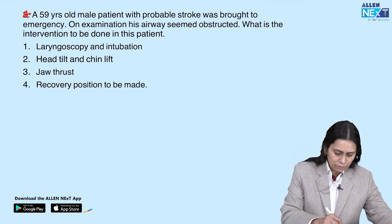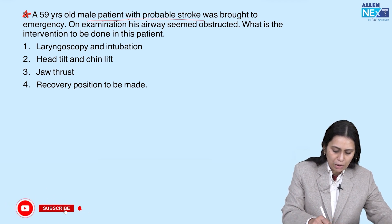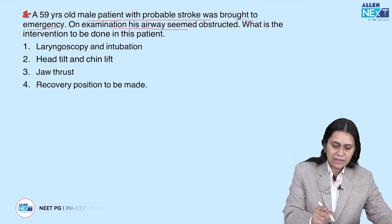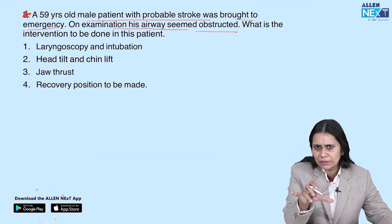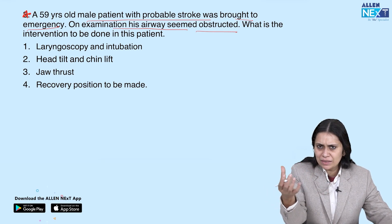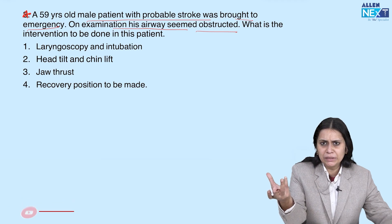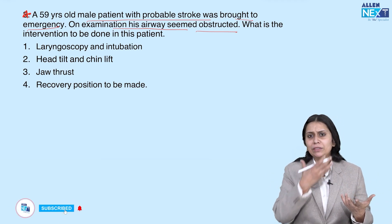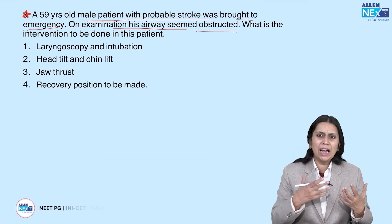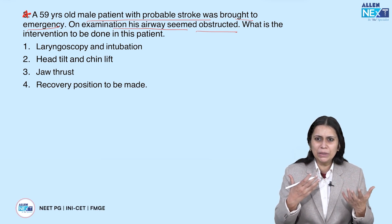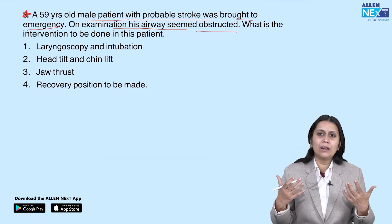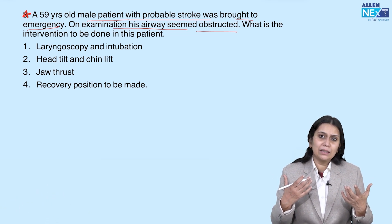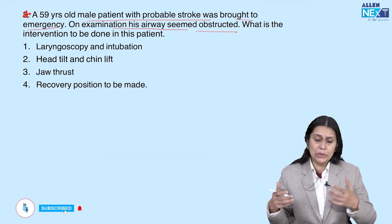A 59-year-old male patient with probable stroke was brought to emergency. On examination his airway seemed obstructed. He had noisy breathing, obstructed airway, and saturation was dipping. Signs of obstructed airway include noisy breathing and overuse of accessory muscles, with saturation on the lower side.